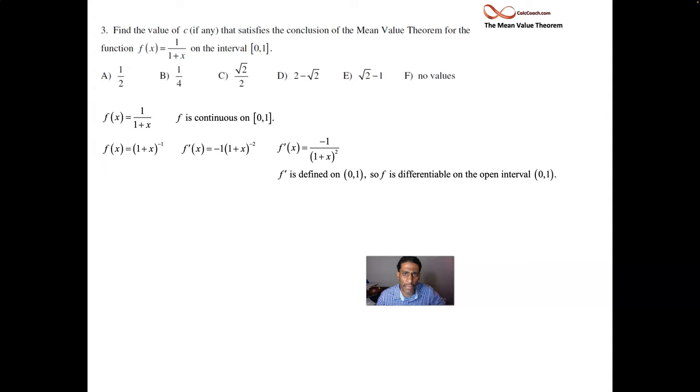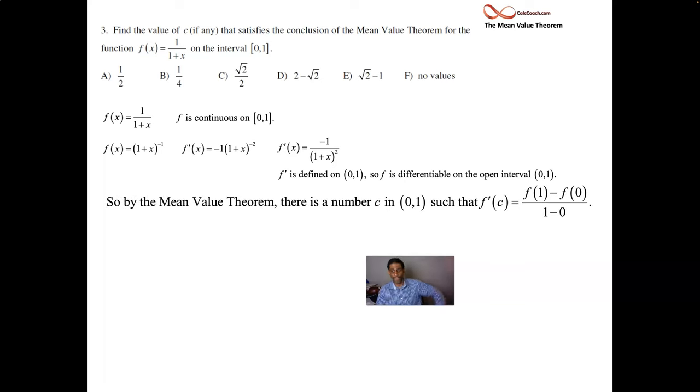This guarantees that there'll be someplace inside the interval 0 to 1 where the slope of the line that connects the two points at 0 and 1 will be equal to the tangent line slope. All right, let's see what that slope is. When you plug a 1 in, what do you get? What is f of 1? And when you plug a 0 in, what do you get? What is f of 0?